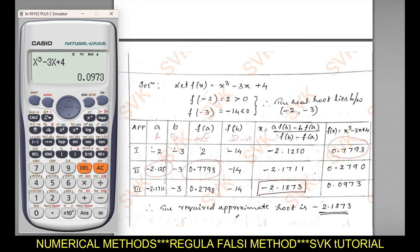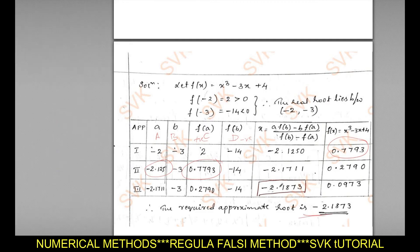f(x₃) = 0.0773, already approaching 0. Therefore the required approximate root is −2.1873. This is the way of solving problems of the Regula Falsi method. If you like this video, kindly subscribe to my YouTube channel, share it with your friends, and don't forget to press the like button. Thank you all for watching.